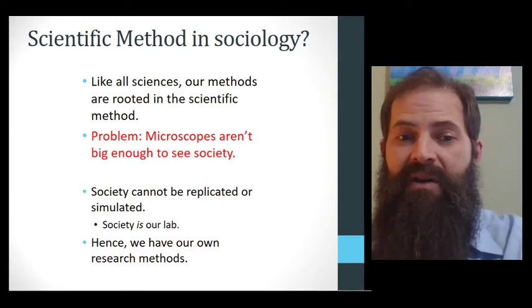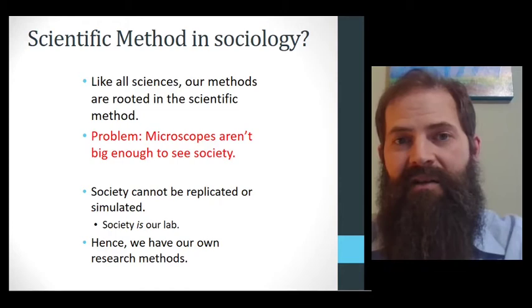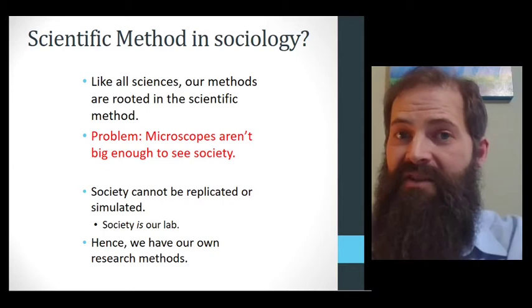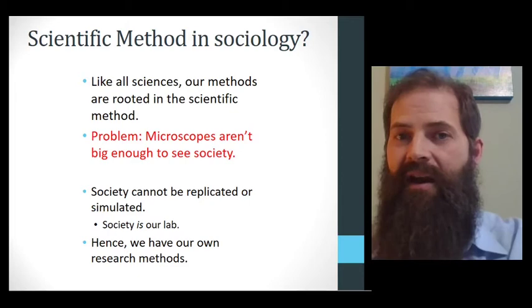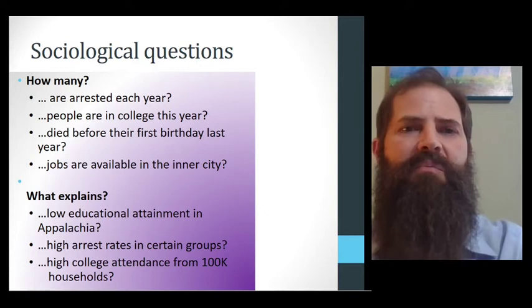As such, rather than try to recreate something in a lab or bring it back to the lab like a chemist or biologist might, sociologists go out into society. In fact, we make the argument that society is our lab. Society is where we practice studying these amazing social phenomenon. As a result of this, sociologists have their own research methods that we utilize to study our society. That's what we're going to talk about today.